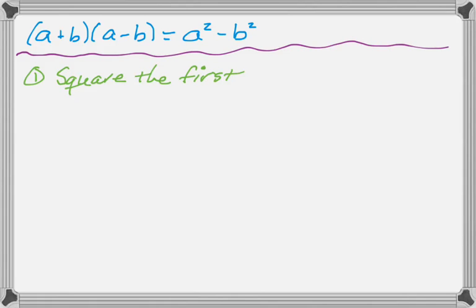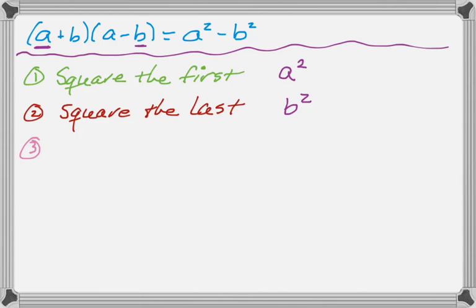So what that means is this. Square the first, that'll give us a squared. You square the last. So this is the last, so that's going to give us b squared. And then you subtract those. So subtracting them would give me a squared minus b squared.